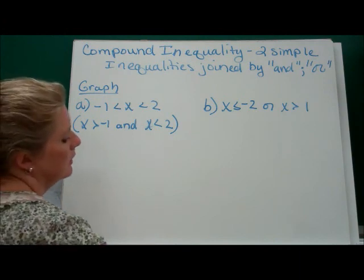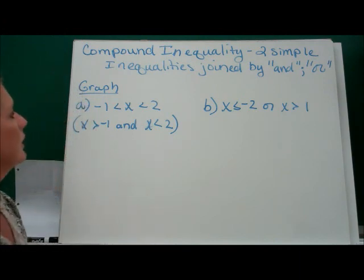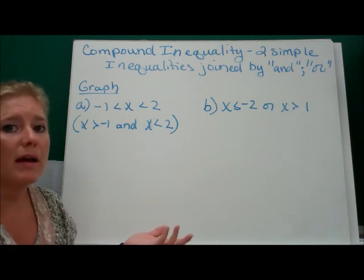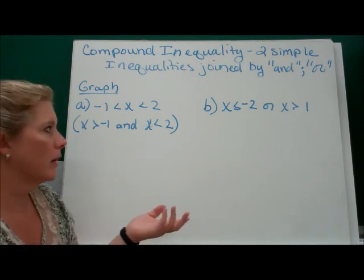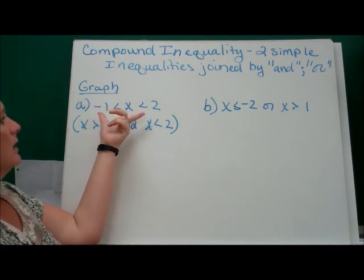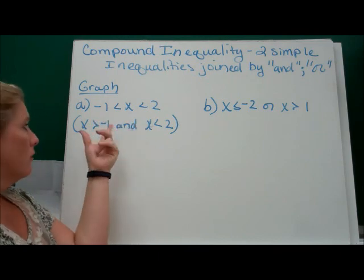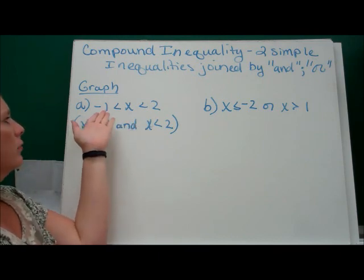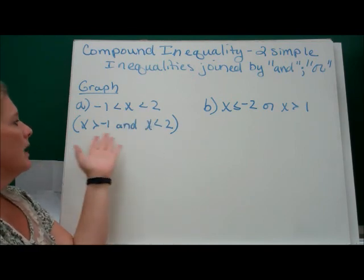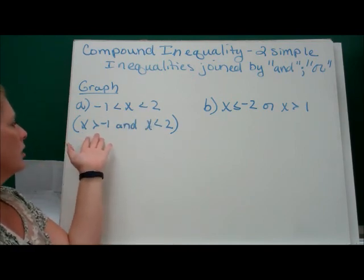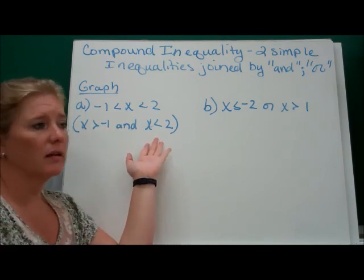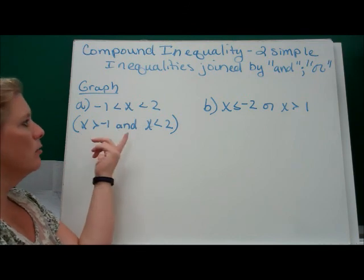Compound inequalities. A compound inequality is two simple inequalities joined by an 'and' or an 'or.' With 'and' inequalities, they write it in this notation, which we also call interval notation. That just means negative 1 is less than x is less than 2. That means it's an 'and' — x is greater than negative 1 and x is less than 2, so x is between those two numbers.